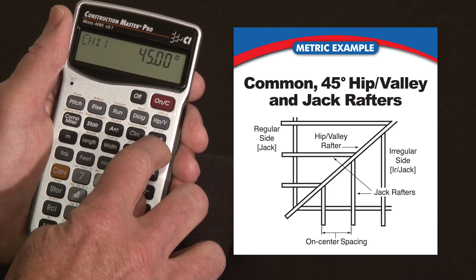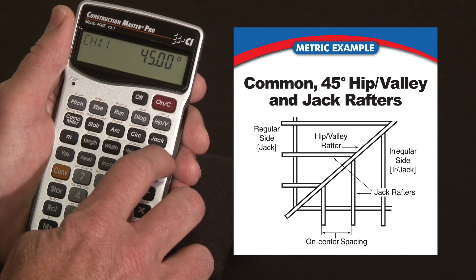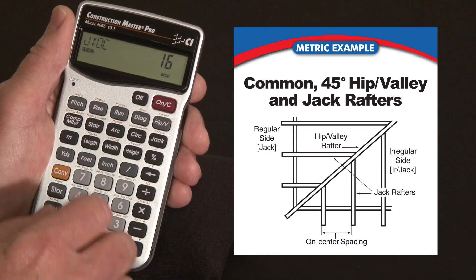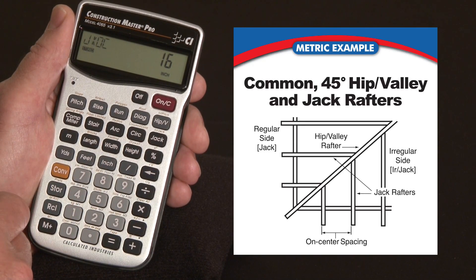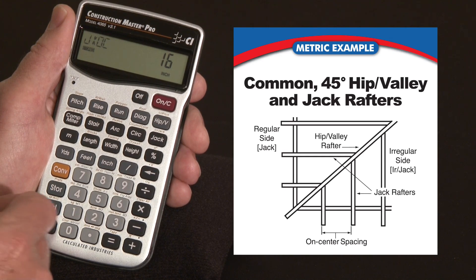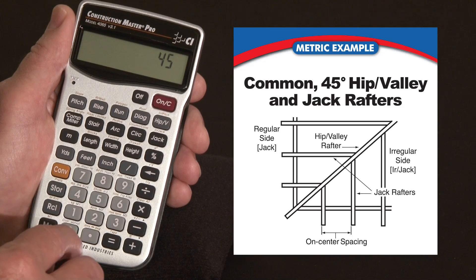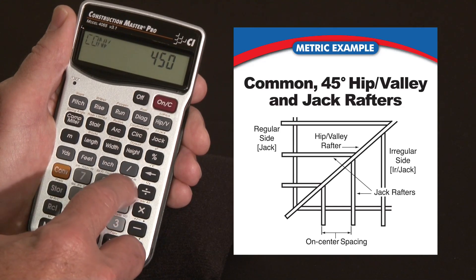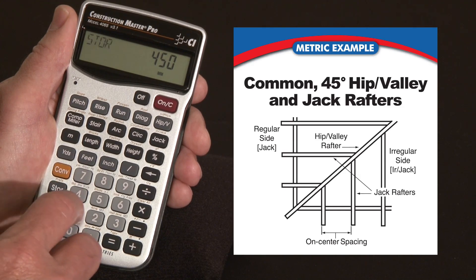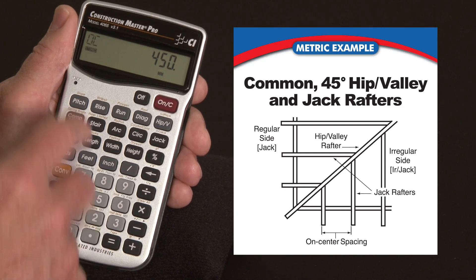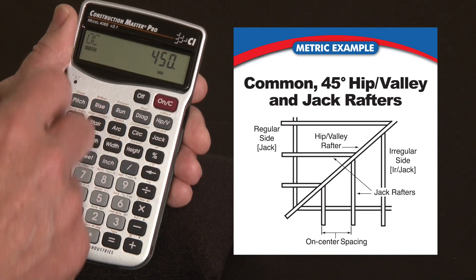The jack rafter key will give you the length of every single jack rafter from the common all the way down to the corner. Press it the first time and it says jack on center 16 inches — that's the common on center spacing in the States. For a metric situation we might want to put in 450 millimeters. So I enter 450, convert to 9, and store that as on center. Over the 5 key there's on center, so I store 5 and that enters it as 450 millimeters.